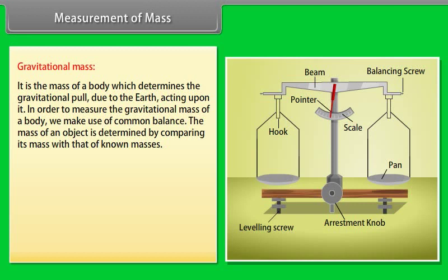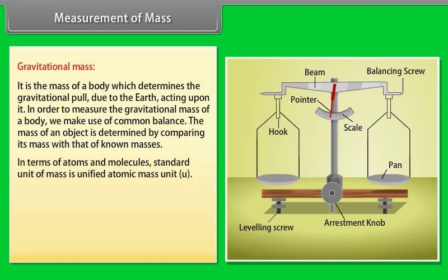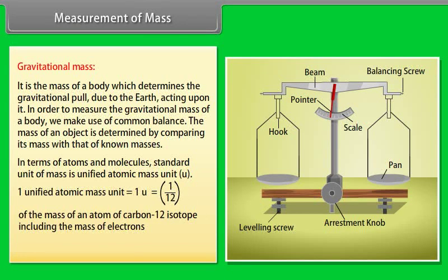In order to measure the gravitational mass of a body, we make use of common balance. The mass of an object is determined by comparing its mass with that of known masses. In terms of atoms and molecules, the standard unit of mass is unified atomic mass unit, that is U.